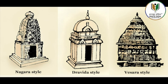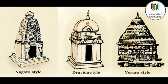Unlike the Nagara temple, the Dravida temple is enclosed within a compound wall. The front wall has an entrance gateway in its center, which is known as a Gopuram. The shape of the main temple tower, known as Vimana in Tamil Nadu, is like a stepped pyramid that rises up geometrically rather than the curving shikara of North India.